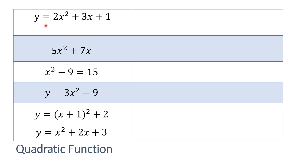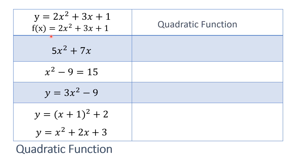First, I have y is equal to 2x squared plus 3x plus 1. Is it a quadratic function? Sometimes, it can be written as f of x is equal to 2x squared plus 3x plus 1. As you can see, what only changes is the y variable and function of x. Technically, when you give a function to your x value, that becomes your y.